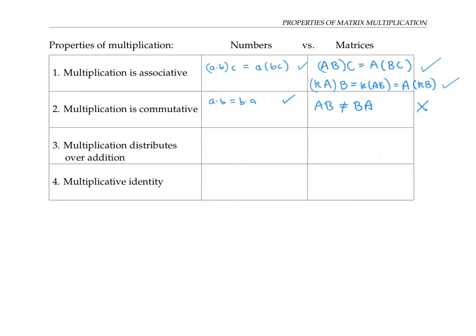Actually, a lot of times it's not even possible to multiply matrices in both orders. For example, if we have a four by three matrix and multiply it by a three by two matrix, that's legitimate because the inner dimensions — three and three — are the same. But if we reverse the order, so instead of A times B we do B times A, that would be a three by two times a four by three, which doesn't make sense.